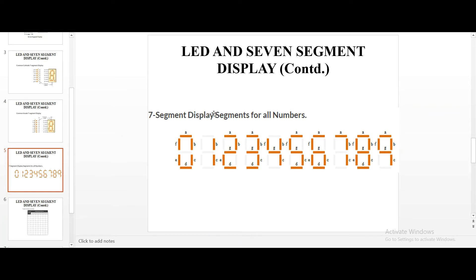Here, this 7 segment display for all the numbers. 0 as I said already, except G, if all the segments are powered, we obtain 0. BC for 1, ABGD for 2 and from 0 to 9, based on the segments which are powered, we get the individual digits.